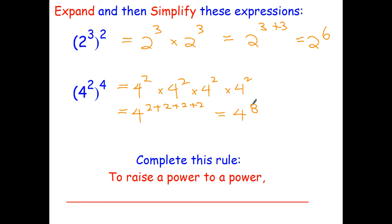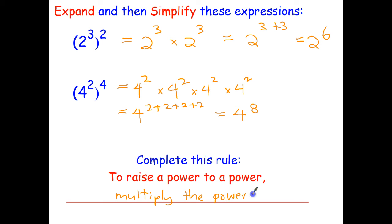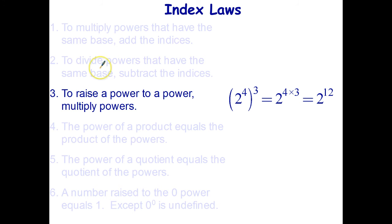Now have a look at those two examples — can you see how we can get from the question to the final answer in just one step? Hopefully you realize that 3 times 2 gives us the 6, and 2 times 4 gives us the 8. That means to raise a power to a power, we multiply the powers. Add that to your index laws: index law number 3 — to raise a power to a power, multiply powers. For example, 2 to the power of 4 times 3 gives a final answer of 2 to the power of 12.